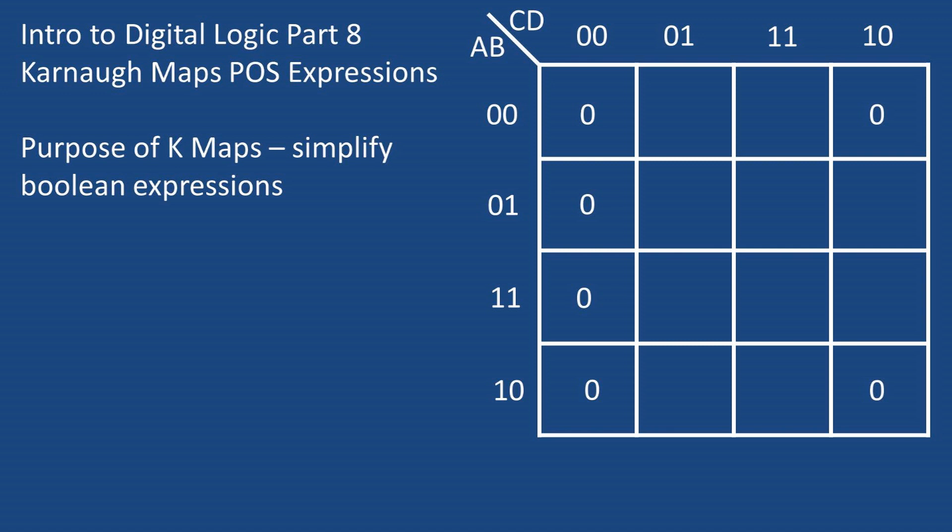For the product of sums Karnaugh map you have to think backwards when thinking about your variables. So A equals zero and A with a line over top equals one.